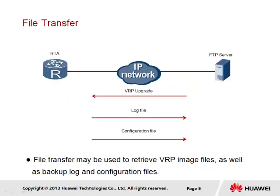A file transfer involves the moving of a file from one storage location to another. The storage location from which the file is being retrieved is generally understood to be remote, meaning that files are transferred between storage locations belonging to different devices. The example shown here illustrates a typical architecture under which file transfers are performed, involving the base device — in this case RTA — and a file transfer server using a protocol such as FTP.